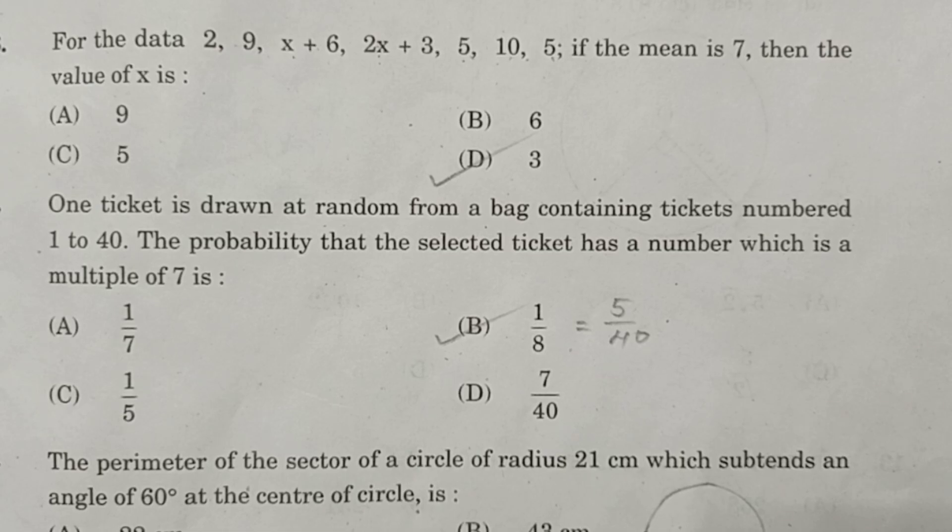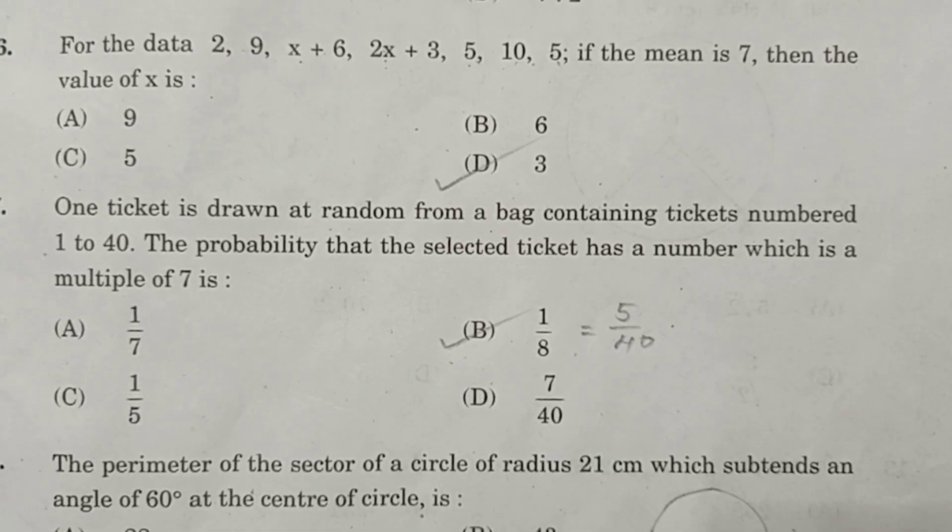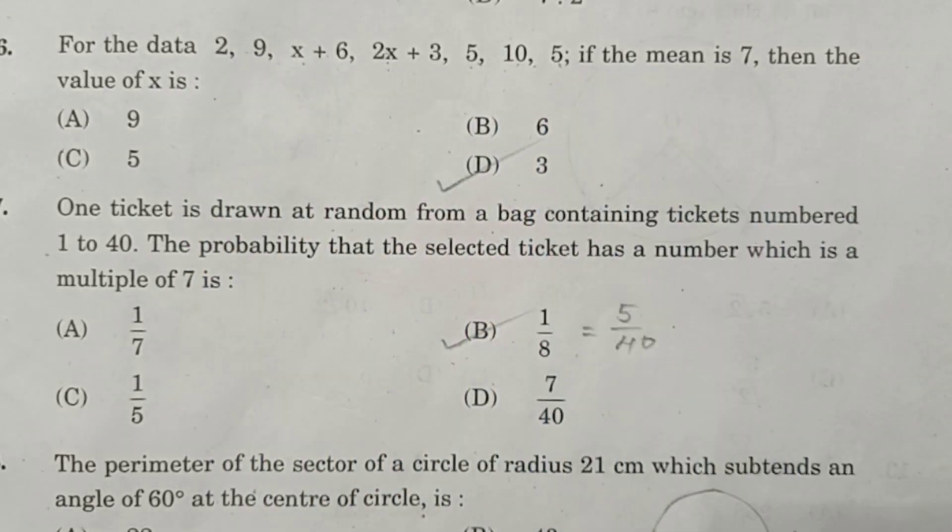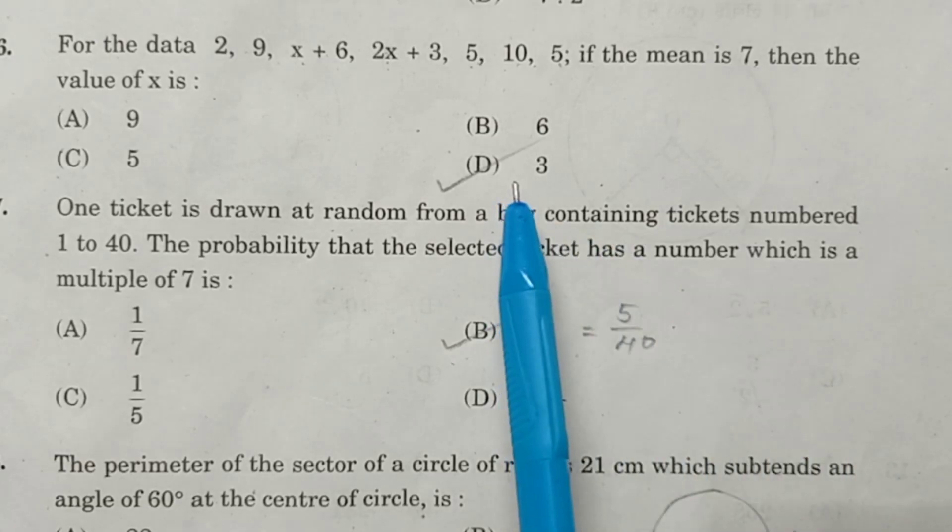Question number 6. For the data 2, 9, X plus 6, 2X plus 3, 5, 10, 5, if the mean is 7, then the value of X is. The answer is 3. Here you can see there are 7 terms. The mean we can find by adding all these terms and dividing by 7, then we will get 3X is equal to 9, X is equal to 3.